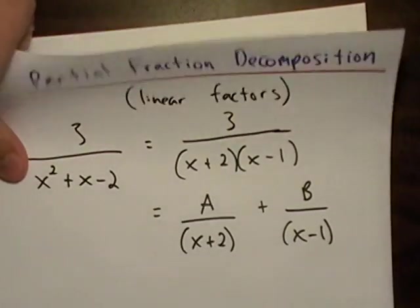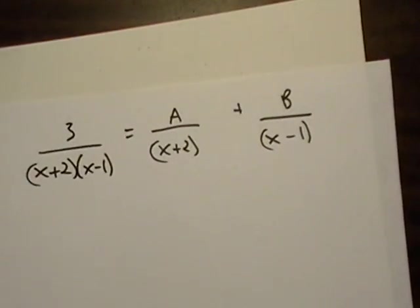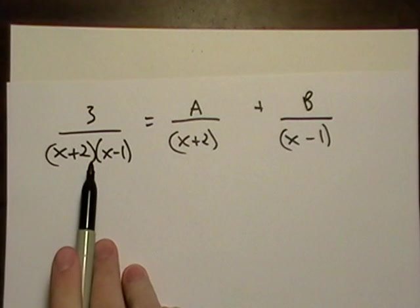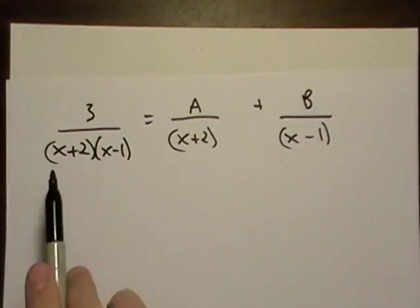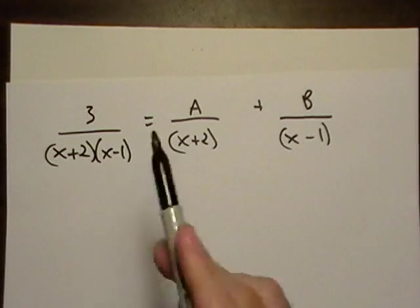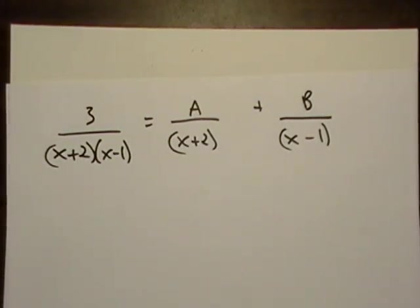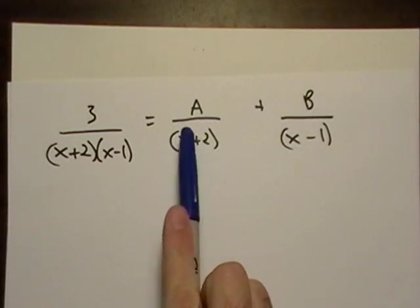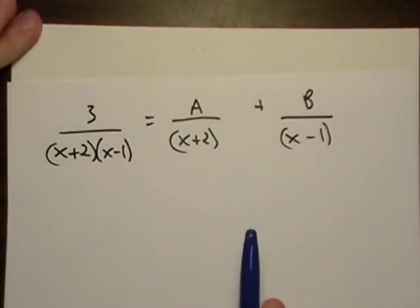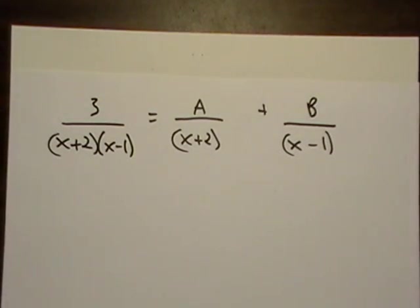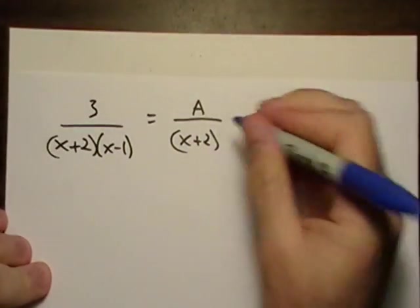Now, when we say linear factors, notice how when I factored my original expression out, I have an x plus 2, that's a line, and an x minus 1, that's also a line. So, we're going to assume that there is a way to do this. And so we'll just write it like this, like I have.